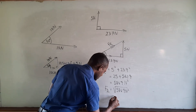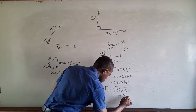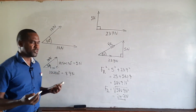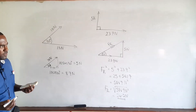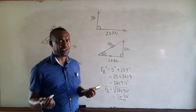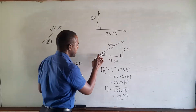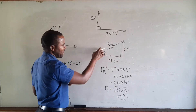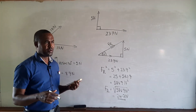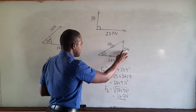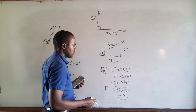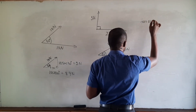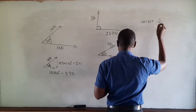That gives us FR equal to 24.2 Newtons, so the magnitude of the resultant force is 24.2 Newtons. Since force is a vector quantity, it has both magnitude and direction, so we need to find angle theta. We use tan since we have the opposite and adjacent sides: tan theta equals opposite over adjacent, which is 5 over 23.7.